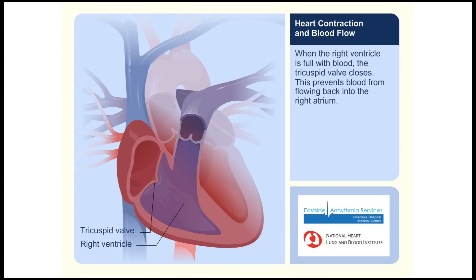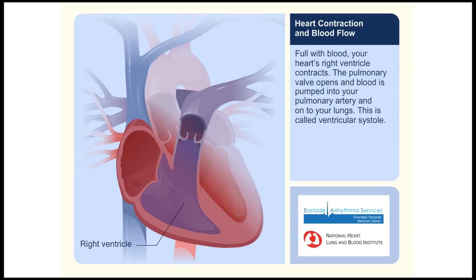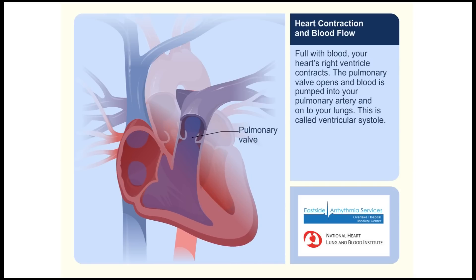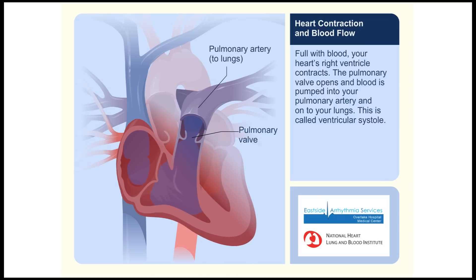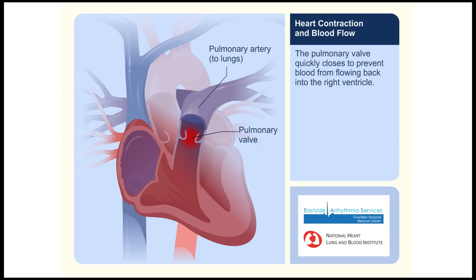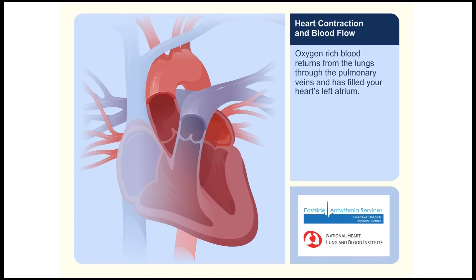When the right ventricle is full with blood, the tricuspid valve closes to prevent blood from flowing back into the right atrium. Your heart's right ventricle then contracts, the pulmonary valve opens, and blood is pumped into the pulmonary artery and on to your lungs. This is called ventricular systole. The pulmonary valve quickly closes to prevent blood from flowing back into the right ventricle.